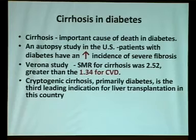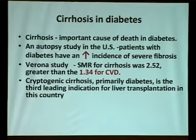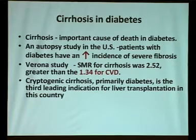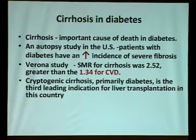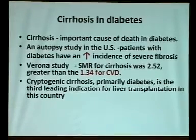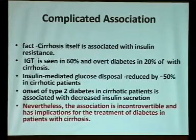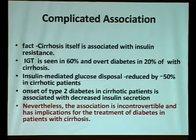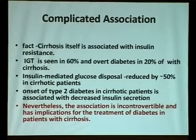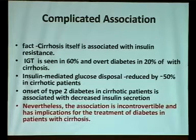Cirrhosis is an important cause of death in diabetes. Autopsy studies in the US show diabetic patients have increased incidence of cirrhosis. The Verona Study shows patients with cirrhosis and diabetes have higher mortality than those with cardiovascular disease. Cryptogenic cirrhosis, previously thought idiopathic, is now recognized as NAFLD-related cirrhosis. Cirrhosis itself is associated with insulin resistance — impaired glucose tolerance is seen in 60% and overt diabetes in 20% of cirrhotic patients. Insulin-mediated glucose disposal is reduced by 50% in cirrhotic patients, and patients with cirrhosis and diabetes have increased mortality.